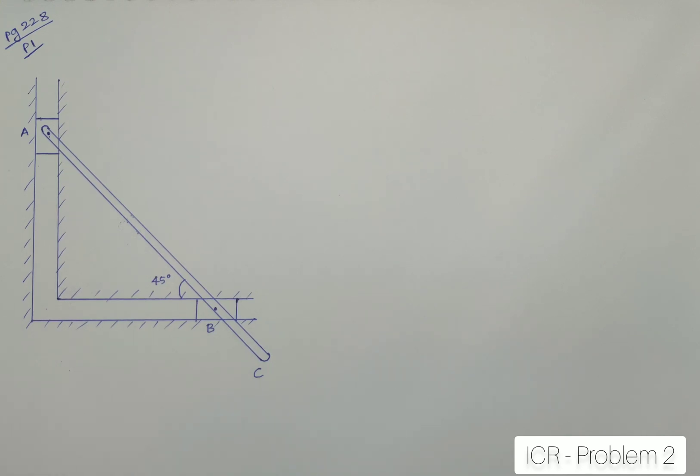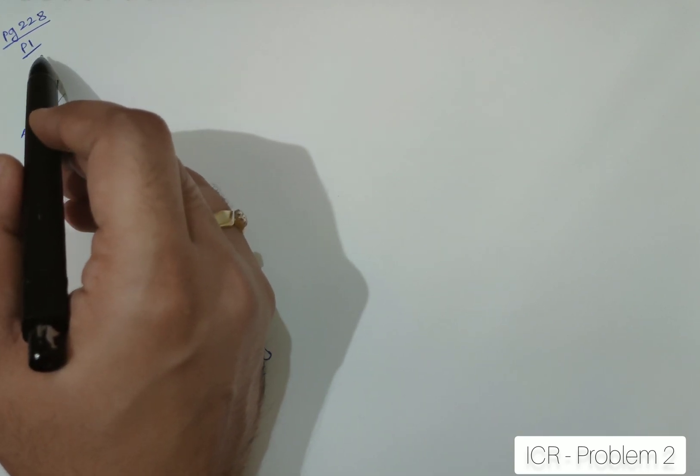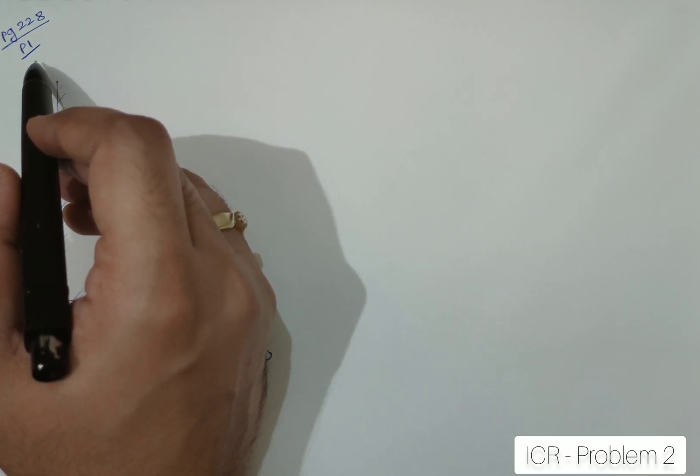Hello, in this particular problem, we are going to find out the velocity VC for this given setup. In this given question, first of all, let me tell you what page number and the problem number is. It is from page number 228 and problem number 1, which is from practice problem for the day.